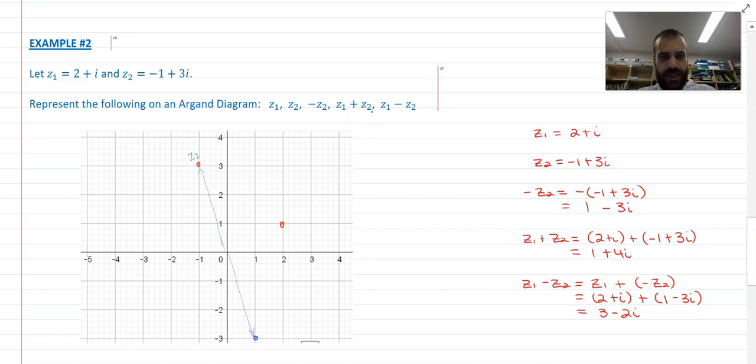z1 plus z2. All right, let's see. This is z1. That's z2. So if I pick, here's z1.